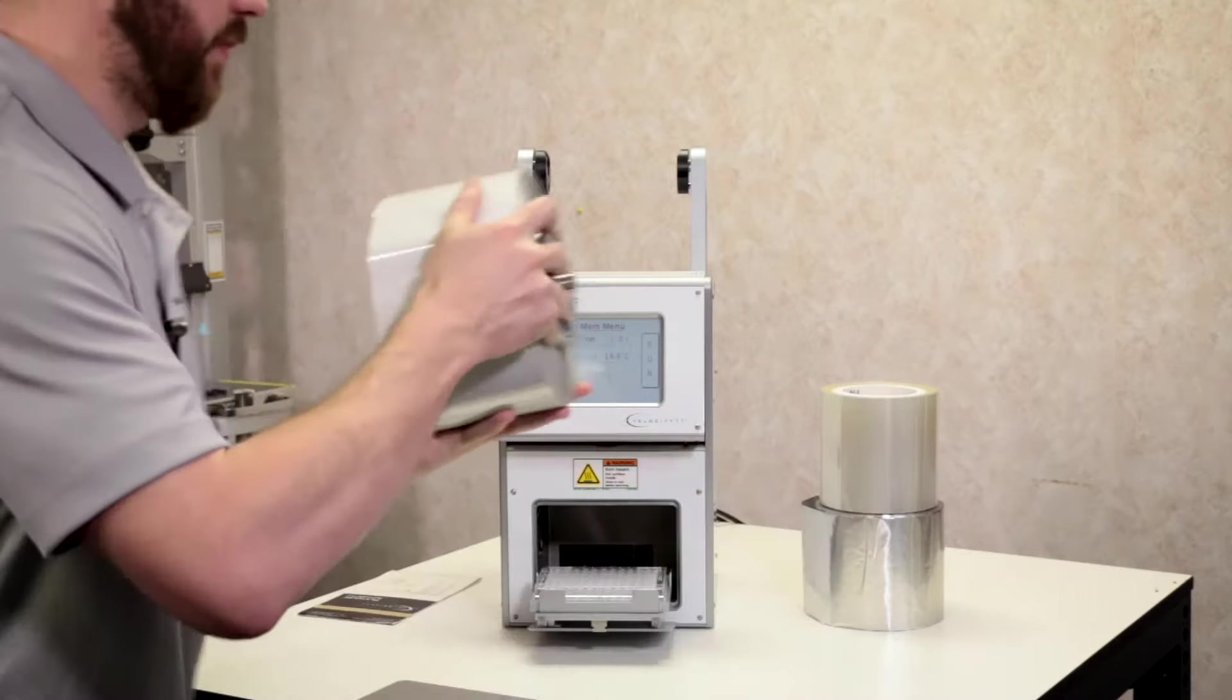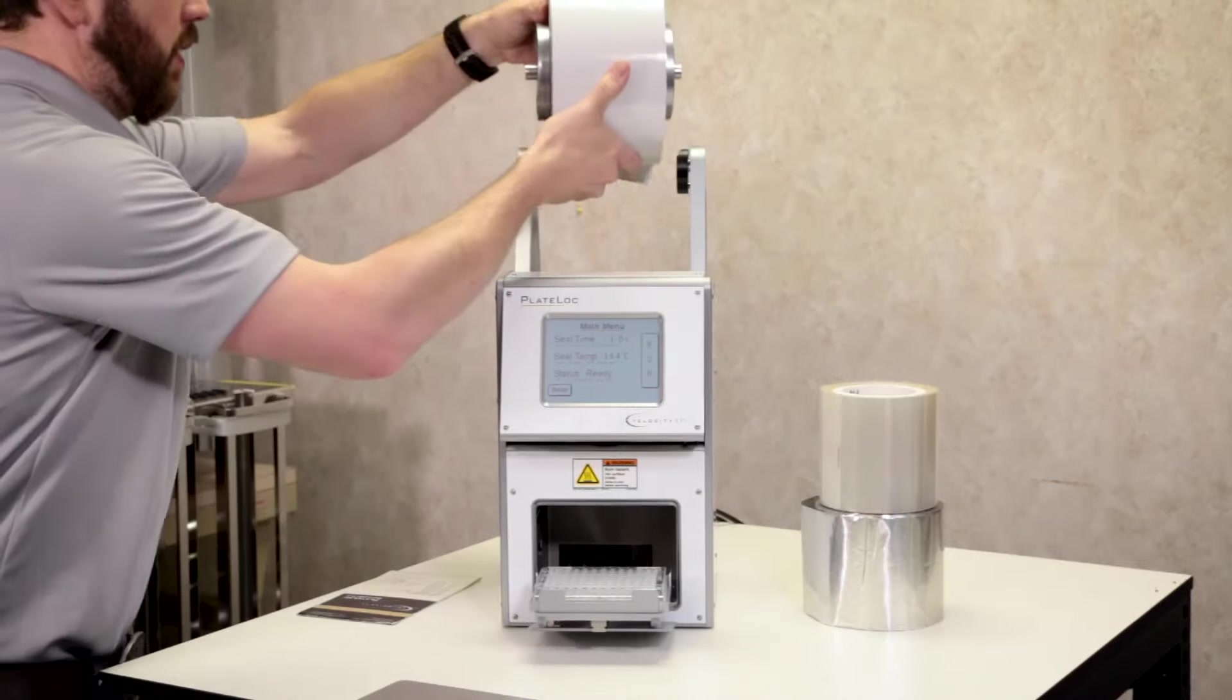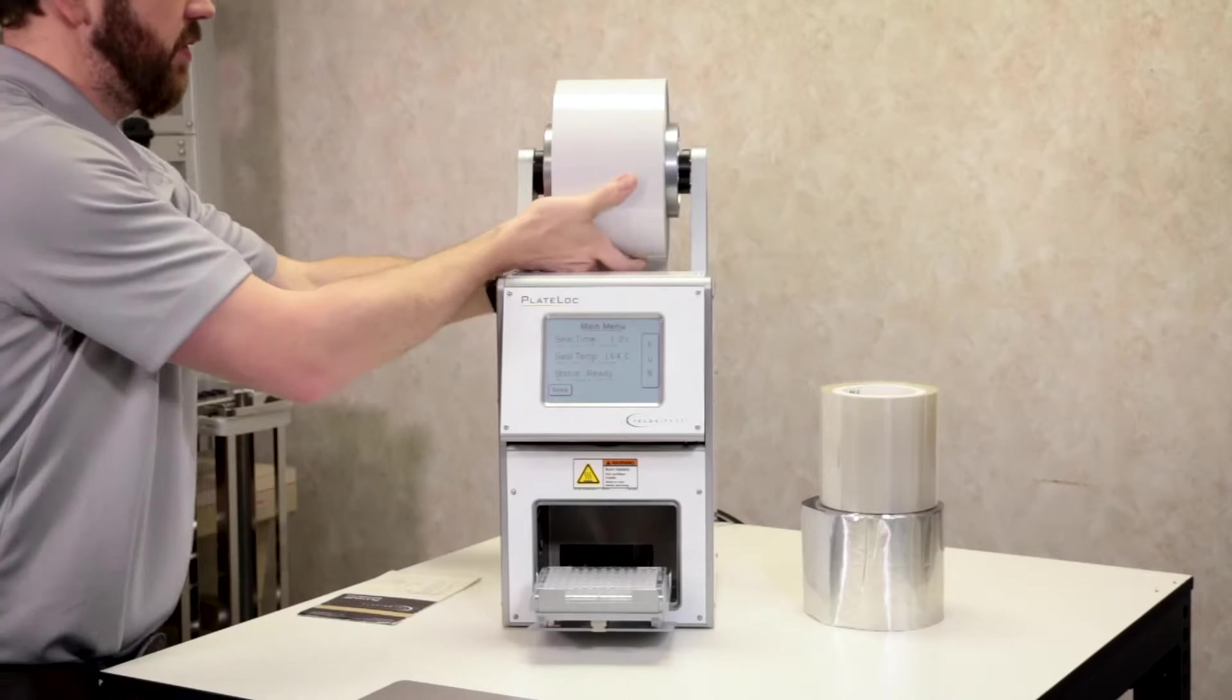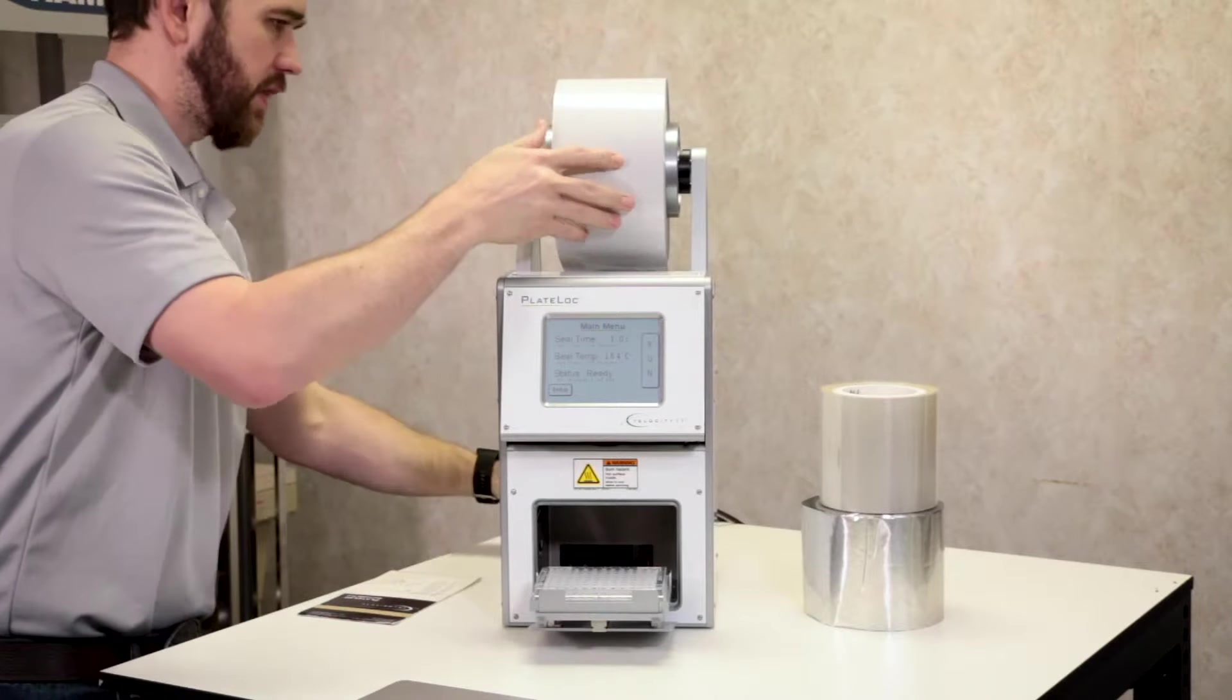Once it's nice and tight, place the seal back on top of your plate lock and run out a little seal.